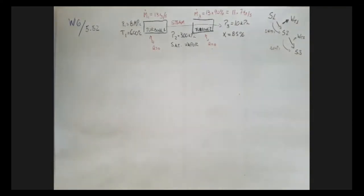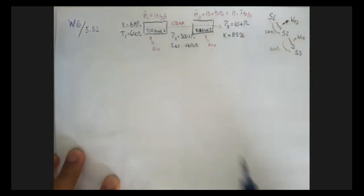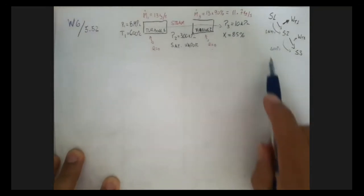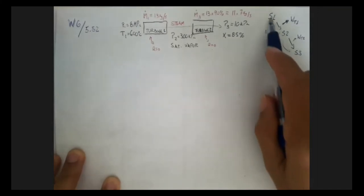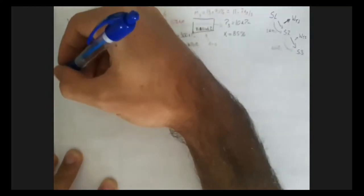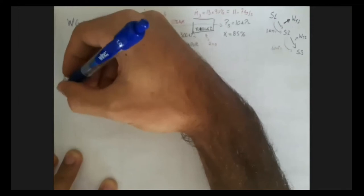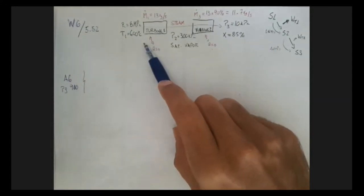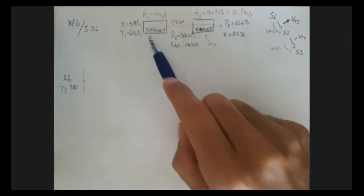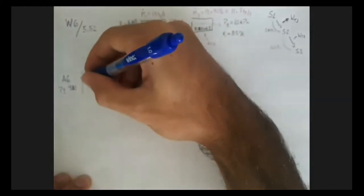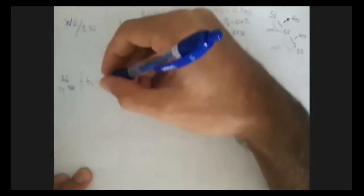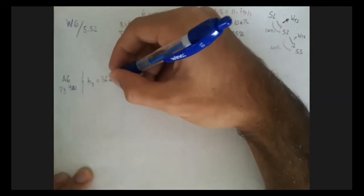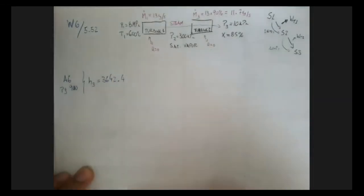We'll grab the enthalpy for all three states. On page 910, table A6, for the superheated state at 8 megapascals and 600 Celsius, the enthalpy h1 is 3642.4 kilojoules per kilogram.